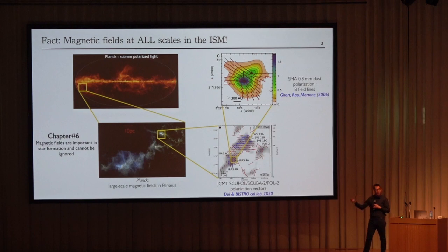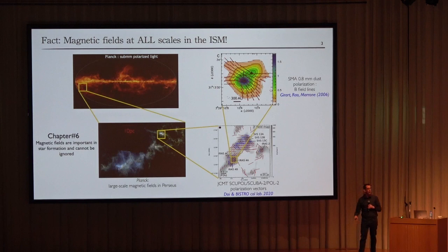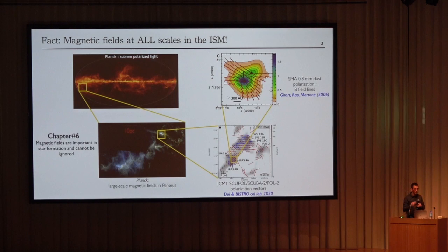To begin with, I will start with a fact. As you have seen this morning, magnetic fields are there, they are important in star formation, and they cannot be ignored. We have to see how the magnetic field evolves down to the protostellar core scale when the stellar core is formed.